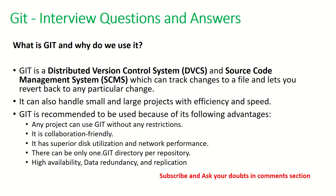The first question that is often asked is: what is Git and why do you use it? Git is a distributed version control system which allows you to track changes to files and even revert them back. When working with multiple distributed team members, it's easy to track everybody's work, see the progress, and control versions of the code being checked in. Git can be used in small and large projects and it's very efficient, helping you speed up the process.